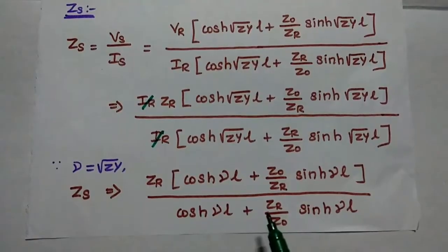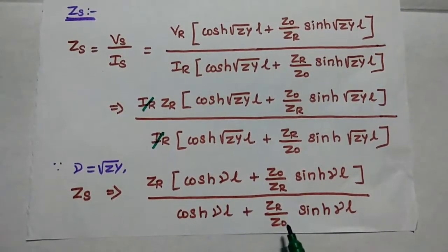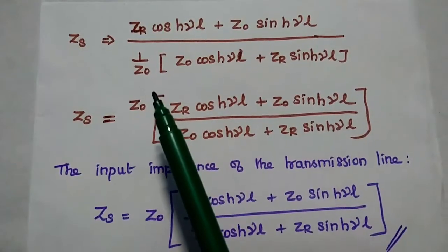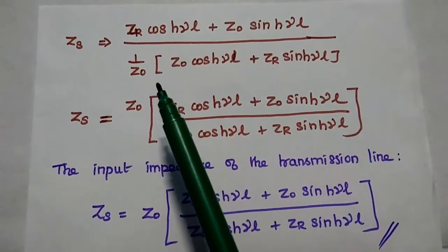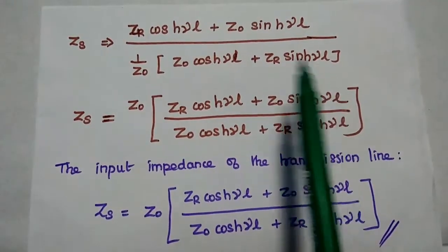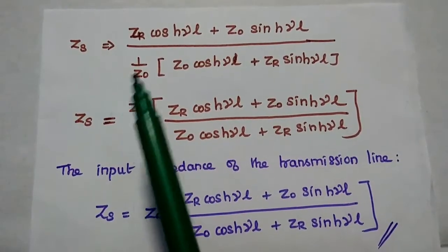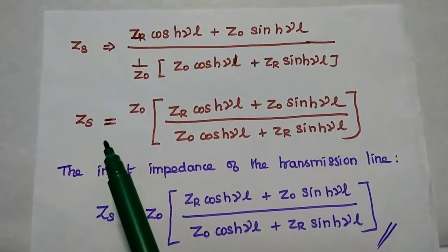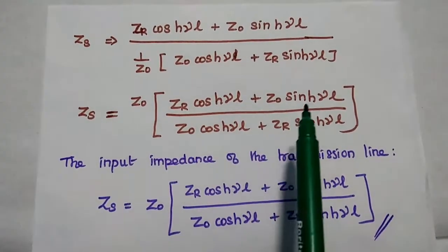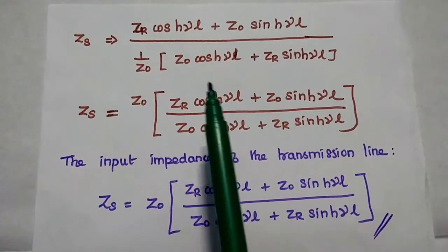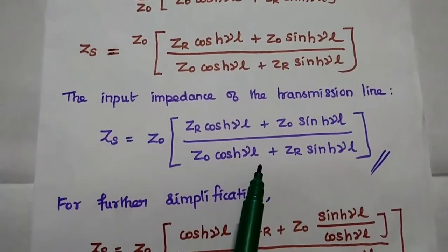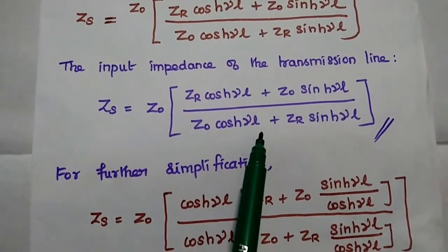For further simplification, we take Z0 as the LCM in the denominator and bring it outside. Then the denominator becomes 1 divided by Z0, times the quantity Z0 cosh(γL) plus Zr sinh(γL). Moving Z0 to the numerator, we get the input impedance Zs equal to Z0 times the quantity Zr cosh(γL) plus Z0 sinh(γL), divided by Z0 cosh(γL) plus Zr sinh(γL). This is the input impedance of the transmission line.